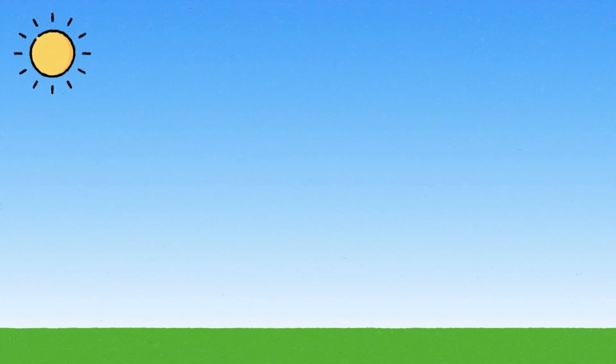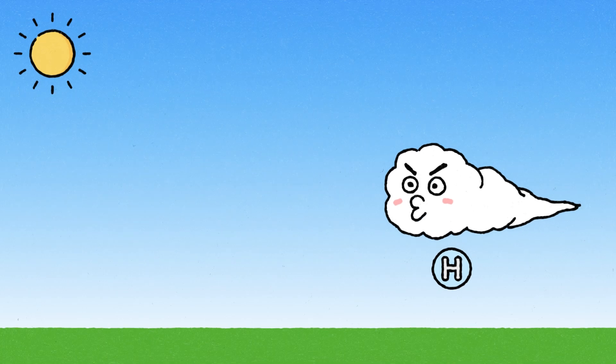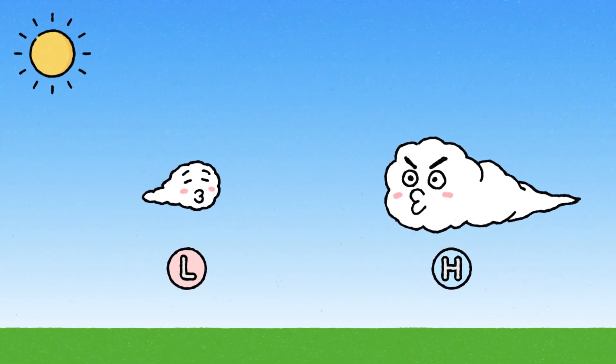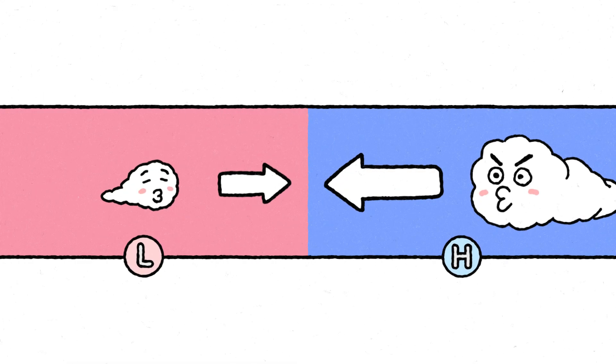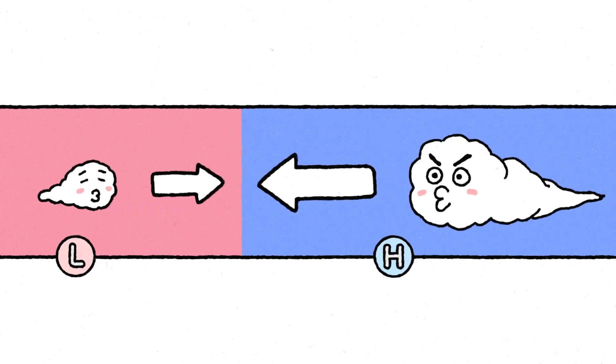Wherever the air pressure is higher, there will be a stronger force. On the other hand, when the air pressure is lower, it means the pushing force of the air is weaker. So what happens when there are differences in air pressure? Air moves from high pressure areas to low pressure areas. This movement of air creates wind.